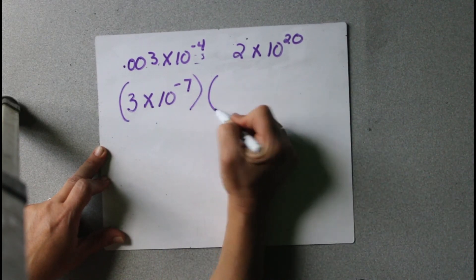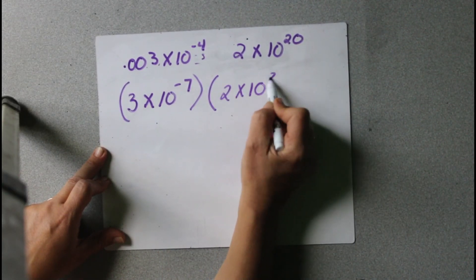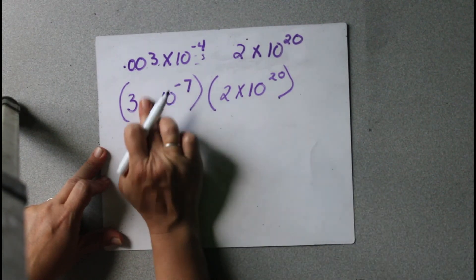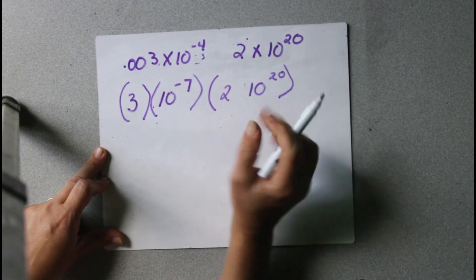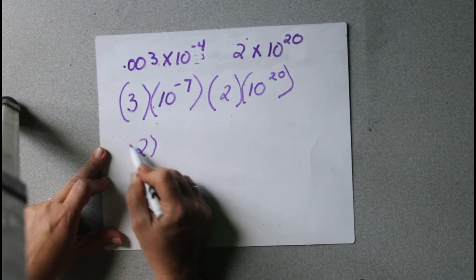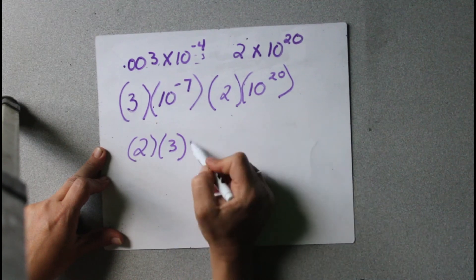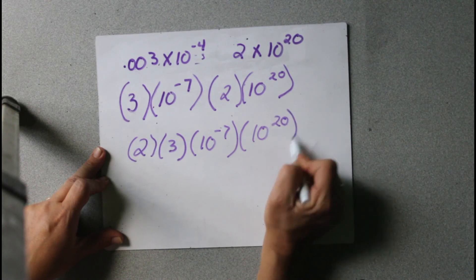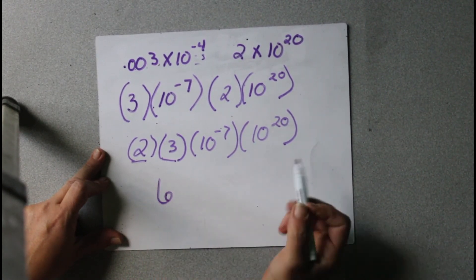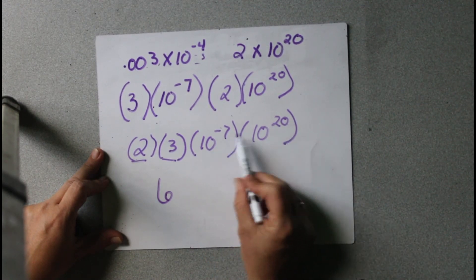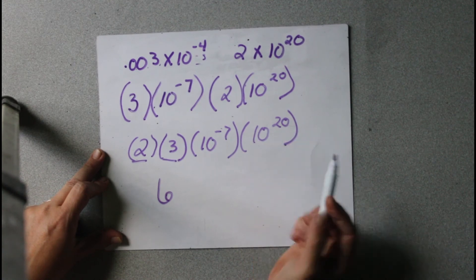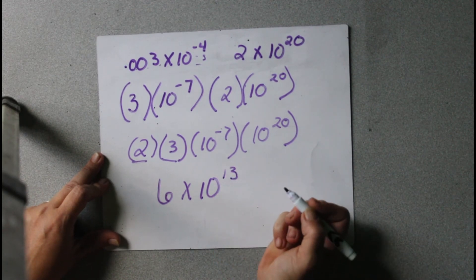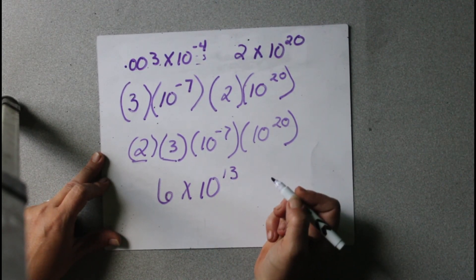And then we're multiplying that times 2 times 10 to the 20th. We can put the 2 and the 3 together, times 10 to the negative 7 times 10 to the 20th. Then we just multiply: 2 times 3 is 6. And when we multiply exponents, we just add them together, so negative 7 plus positive 20 would be 13. So 6 times 10 to the 13th. Super easy.